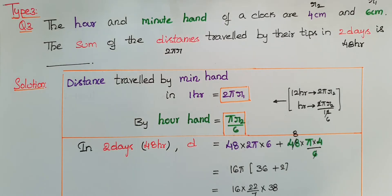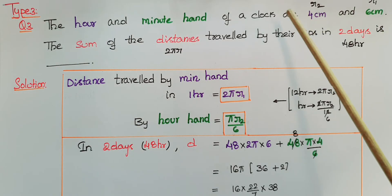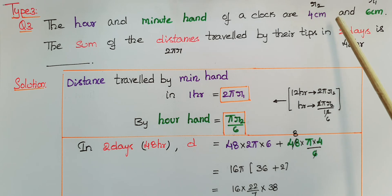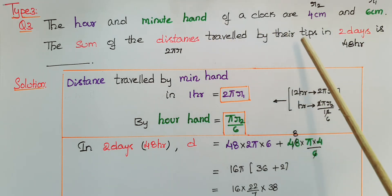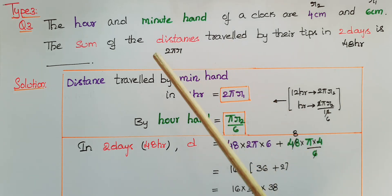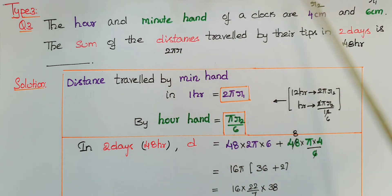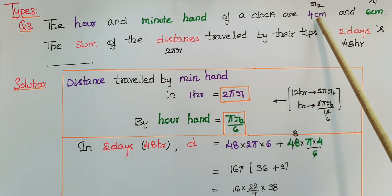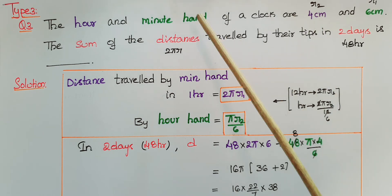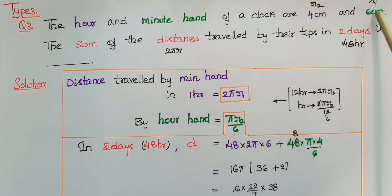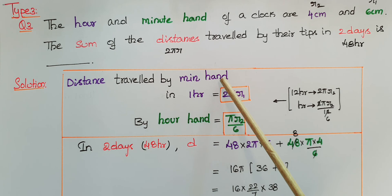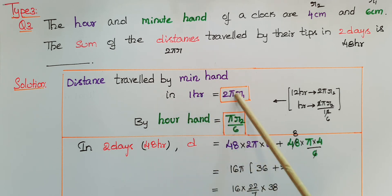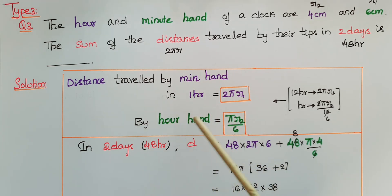This is another type of problem. The hour hand and minute hand of a clock are 4 centimeters and 6 centimeters respectively. The sum of the distances traveled by the tips in two days is to be found. Here the hour hand length r2 is 4 centimeters and the minute hand length r1 is 6 centimeters. The distance traveled by the minute hand in one hour is 2πr1 and by the hour hand is πr2/6.